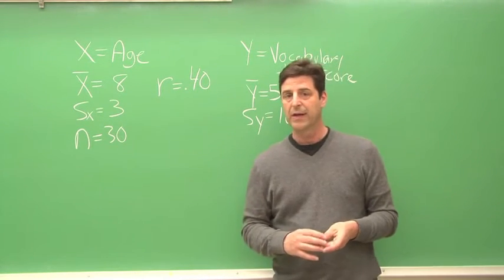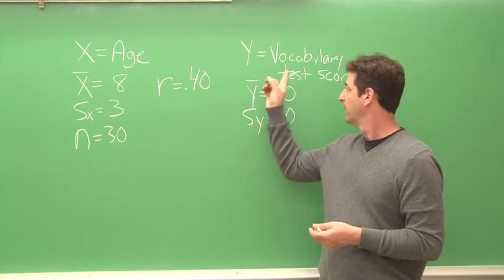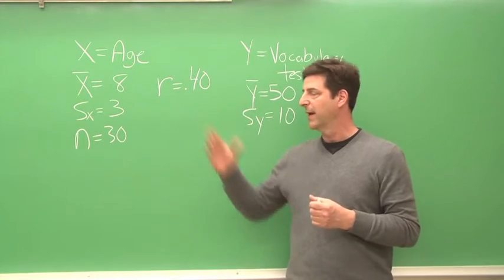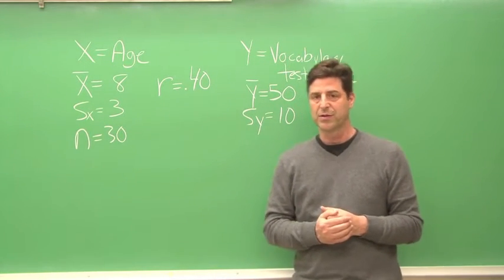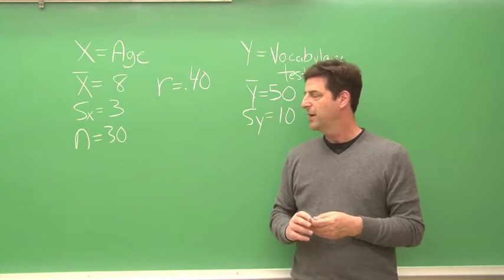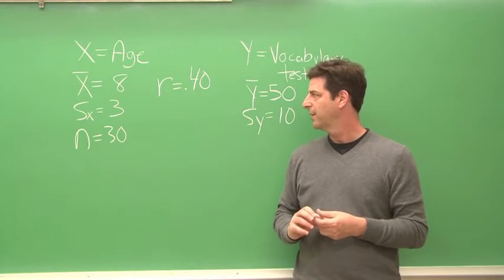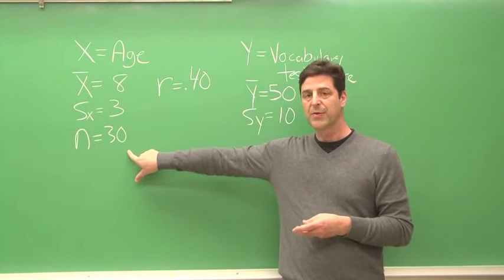So let's suppose that we have two variables, age and vocabulary test scores, and we'll make age the x variable and vocabulary test scores the y variable. Our average age in this sample is 8 with a standard deviation of 3, and the sample size is 30.